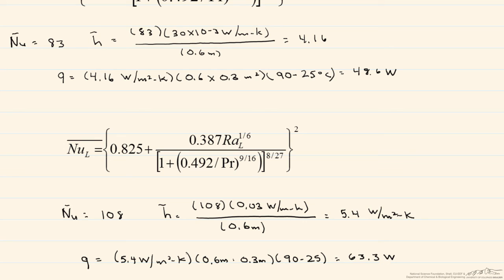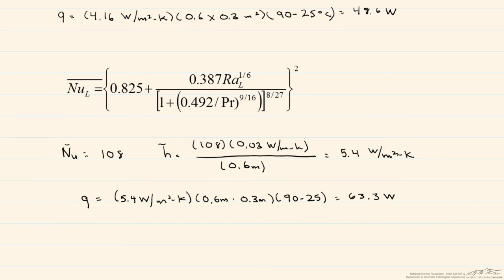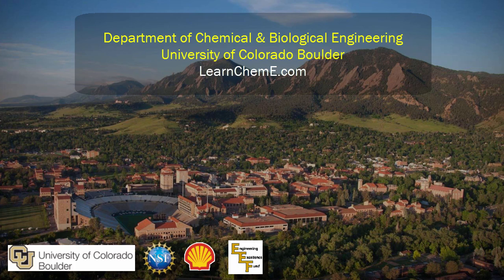Determining convective heat transfer coefficients is challenging because of the differences you can get depending on what correlation you use. In this case, because the first one is considered more accurate due to its more limited range (only laminar flow), that would probably be the more suitable one to use.